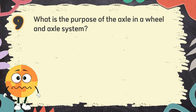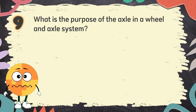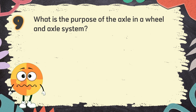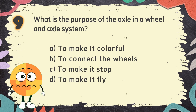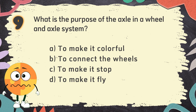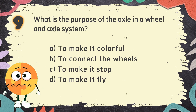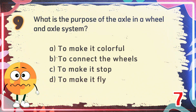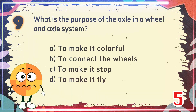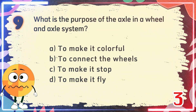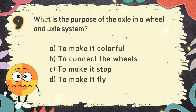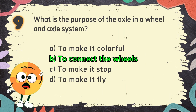Number 9. What is the purpose of the axle in a wheel and axle system? The choices are: A. To make it colorful. B. To connect the wheels. C. To make it stop. D. To make it fly. The correct answer is B. To connect the wheels.